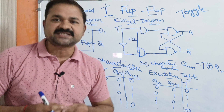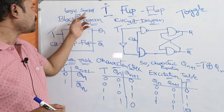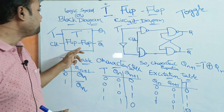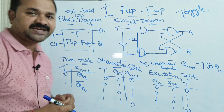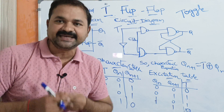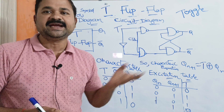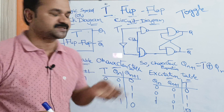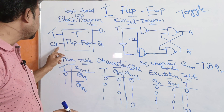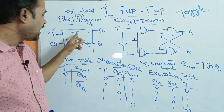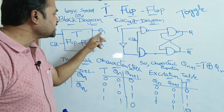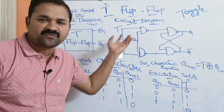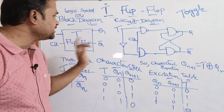First, let us see the logic symbol or block diagram. The T flip-flop accepts one input, that is T. Since it is a flip-flop, we must apply a clock pulse. It produces two outputs: Q and complement of Q, that is Q-bar.